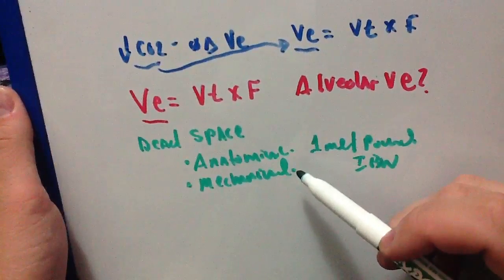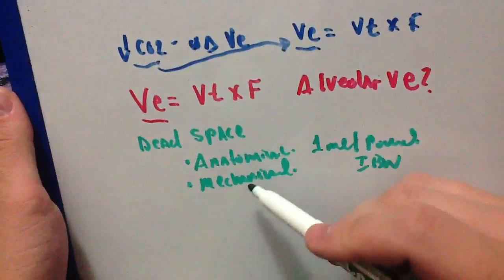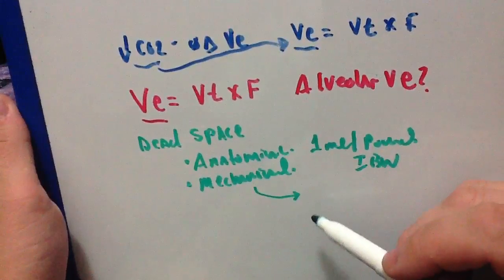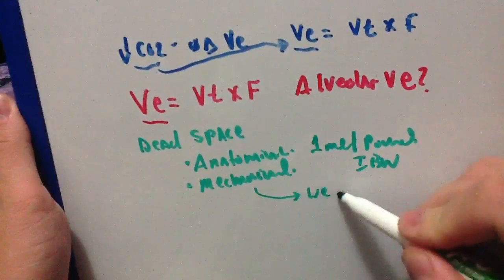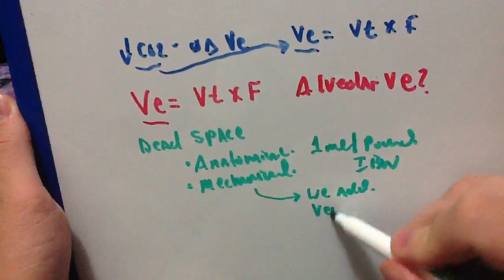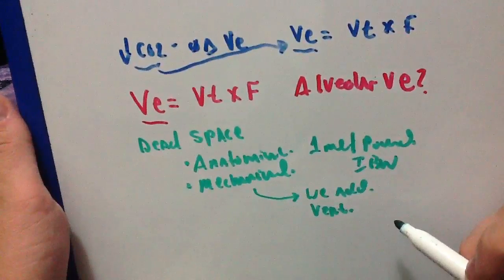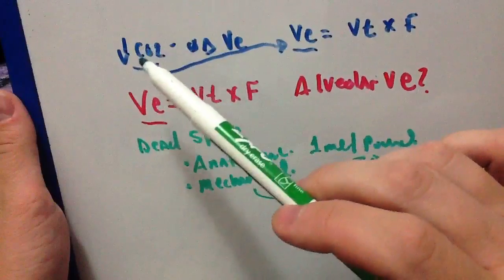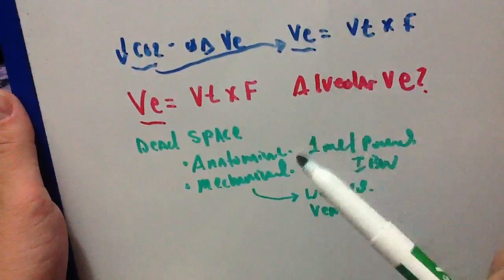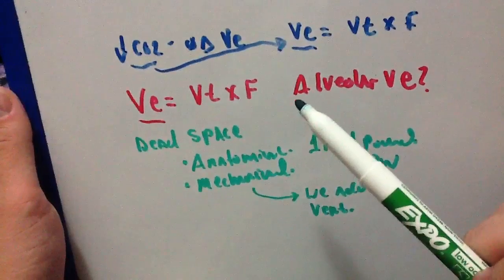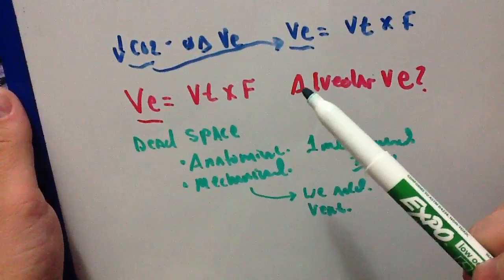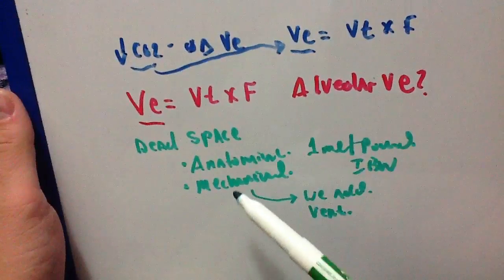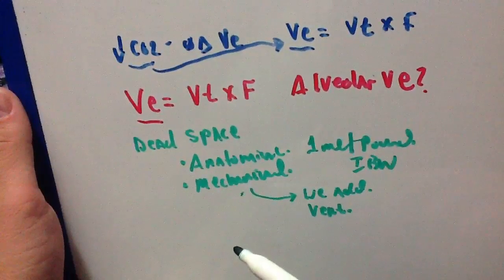Mechanical dead space is the dead space that we add generally through the ventilator circuit, the endotracheal tube, HMEs, and so on, and that can actually be quite significant in some cases. That's what we add when we put somebody on a ventilator, including the circuit and so forth. Getting back to the original question — can we decrease CO2 without increasing VE, minute ventilation? I would say yes, in the sense that I can decrease my dead space. I can't really do a whole lot about anatomical dead space, but I can decrease my mechanical dead space on my ventilator.